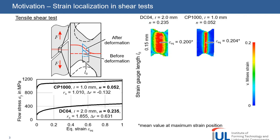The deformation localizes in a very narrow area. The CP1000, which has weaker hardening, shows a very narrow localization of strain. Challenging is the measurement of these very local strains since DIC systems use discrete elements of a defined size, and local strains within the discrete element will be averaged.